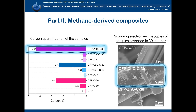The results indicated that the presence of zinc contributed to greater carbon deposition on the substrates, while the copper composites presented signs of nanotube formation on the ceramic fiber paper.